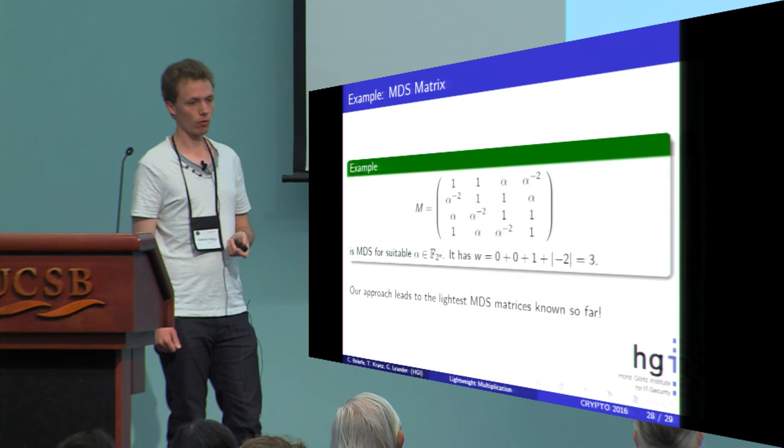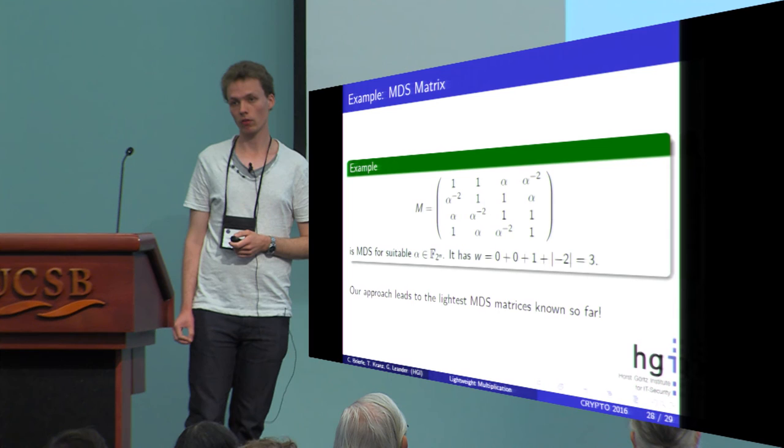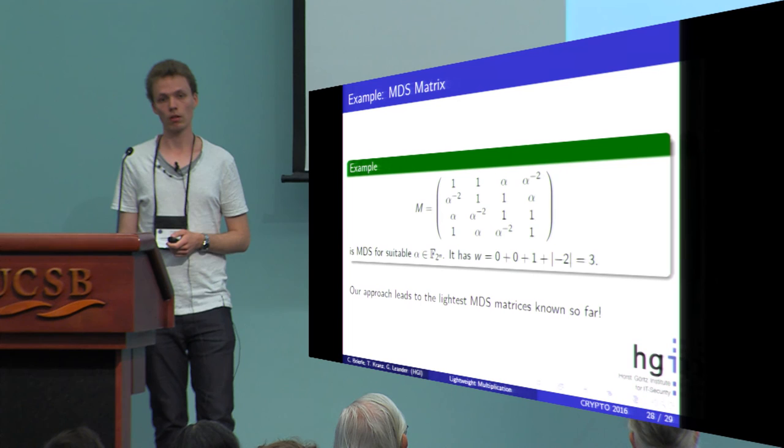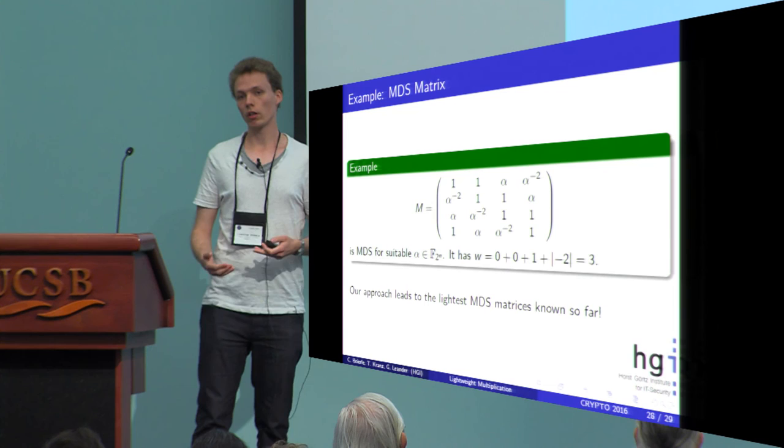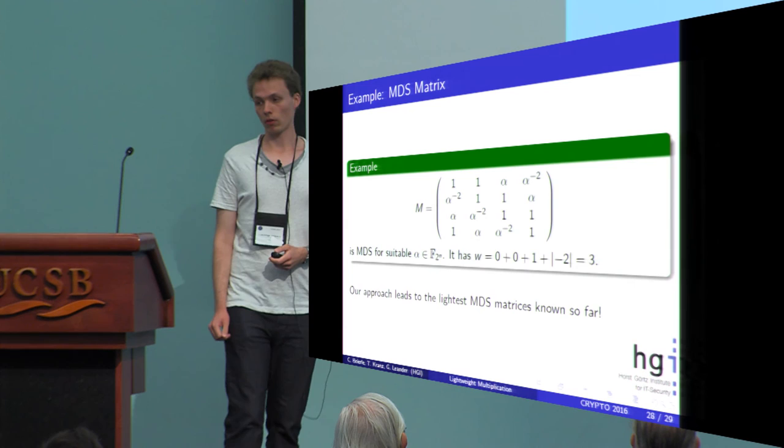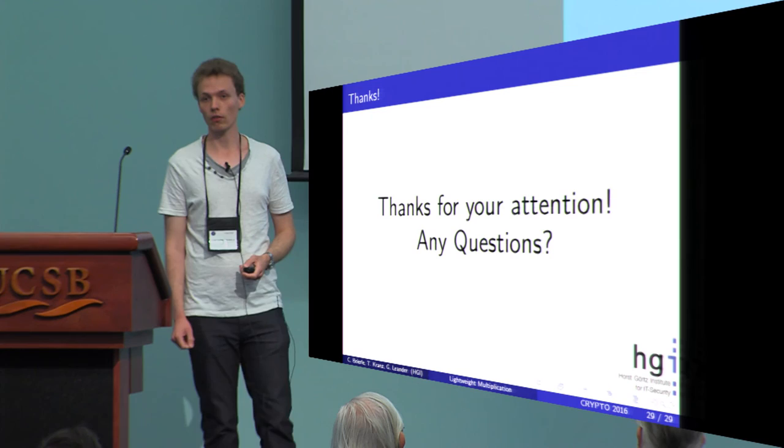The algorithm returns an MDS matrix M with the smallest number W. In our cases this leads to slightly lighter MDS matrices known so far from the FSE 2015 and 2016 papers. We are able to slightly reduce the XOR count here if we use the knowledge of how to choose different bases for the representation of the finite fields. This concludes my talk and thanks for your attention.